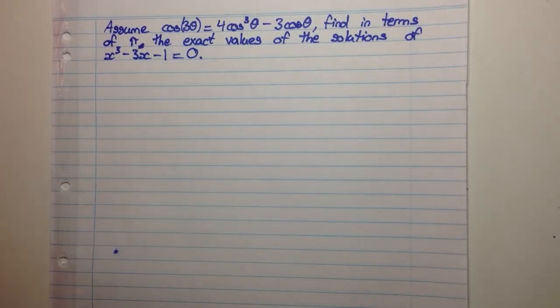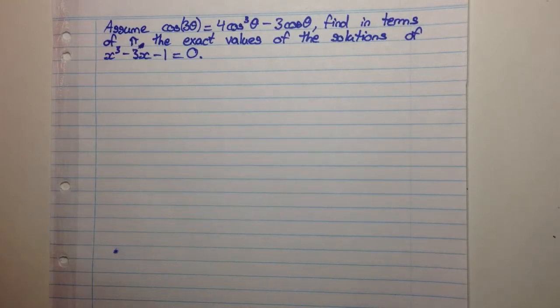Okay, welcome to today's video everyone. Assume cos(3θ) equals 4cos³θ minus 3cosθ.